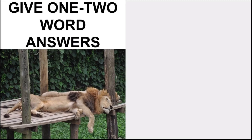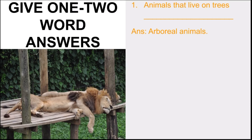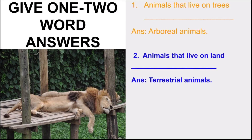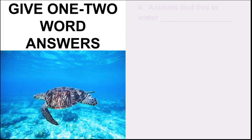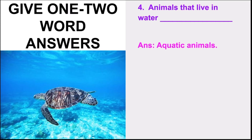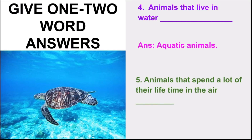Next, give one or two word answers. Animals that live on trees are called arboreal animals. Animals that live on land are called terrestrial animals. Animals that live on land and in water are called amphibious animals. Animals that live in water are called aquatic animals. Animals that spend a lot of their lifetime in the air are called aerial animals.